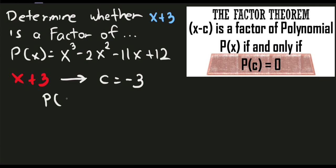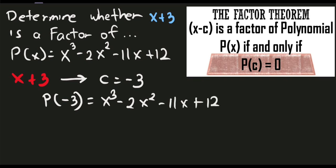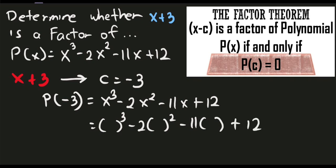P sub negative 3 equals x cubed minus 2x squared minus 11x plus 12. Substituting x as negative 3: we have negative 3 cubed minus 2 times negative 3 squared minus 11 times negative 3 plus 12. So the first value is negative 3 cubed. Negative 3 times negative 3 is 9, times negative 3 is negative 27.